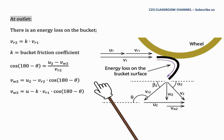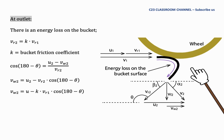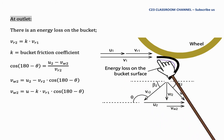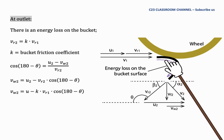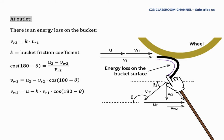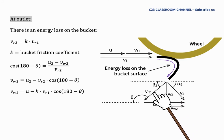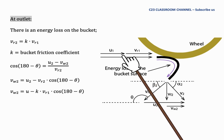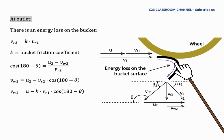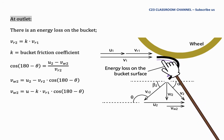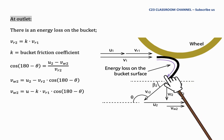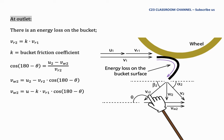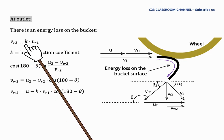Now for the outlet assumptions: when VR1 hits the bucket, the relative velocity VR1 flows along the shape of the bucket and exits as VR2. Because the jet velocity flows along the surface of the blade, energy losses on the bucket surface occur. We can write an equation comparing VR1 and VR2 as: VR2 equals K times VR1.